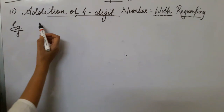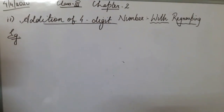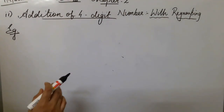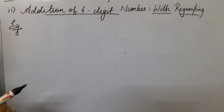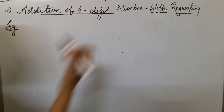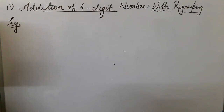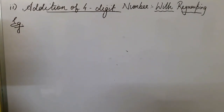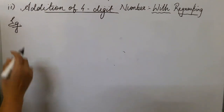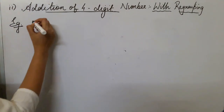Now the second topic: addition of 4-digit numbers with regrouping. As we studied, without regrouping there was no change in groups of place values. But with regrouping, there will be a change in place values — in simple words, there would be a carrying method. Let's see it clearly with an example.